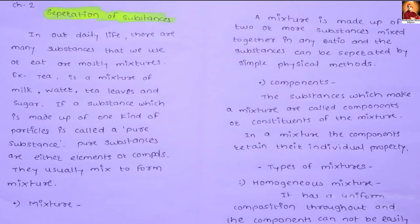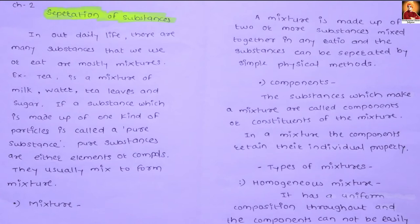Ok friends, in the next lecture we start the separation of substances. What is the separation of substances? A mixture is made up of two or more substances. When two or more substances get mixed together in any ratio, it is called a mixture.